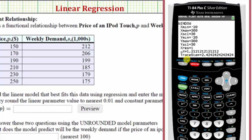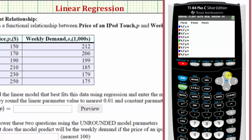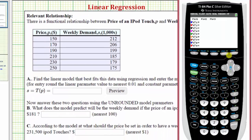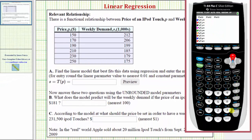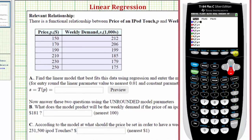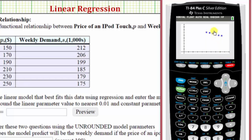There are a couple of ways to turn on the scatterplot. If we press Y equals, a quick way is to go up to Y1, press enter, and then back down. Notice how Plot 1 is now highlighted. So if we press graph, we can now see the scatterplot.